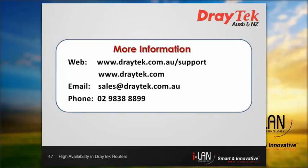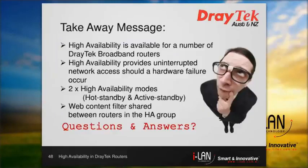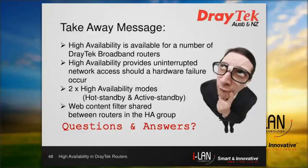This is the end of the presentation today. For more information, please visit our website at www.draytek.com.au or send us an email at sales@draytek.com.au. Some points to take away from today's presentation: High Availability is available for a number of DrayTek broadband routers; High Availability provides uninterrupted network access should a hardware failure occur; two modes of High Availability can be used — Hot Standby and Active Standby; and the web content filter can be shared between all routers in the High Availability group. We now have time to take questions from you, so feel free to type a question and we will provide the right answer.